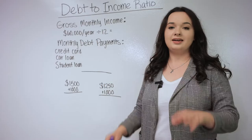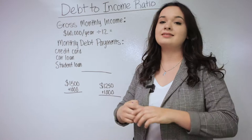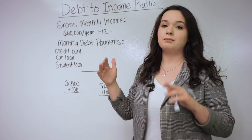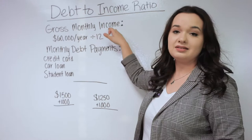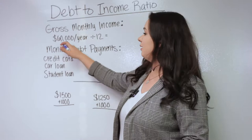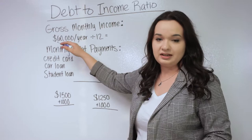In the simplest terms, DTI is your monthly debt payments that you're responsible for divided by your monthly gross income. Let me show you how easy it is to calculate. First, you're going to look at your gross monthly income. This is your pre-tax income for the year. In this example, I've used $60,000 a year. To find the gross monthly income, we divide that by 12, which gives us $5,000.